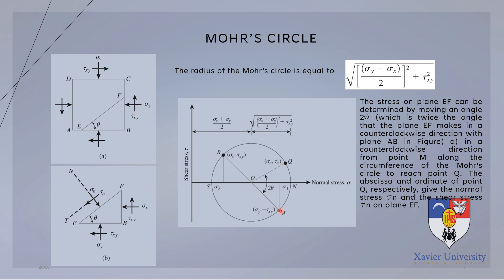From point M, we move 2-theta in a counterclockwise direction to arrive at a point on the Mohr's Circle. The coordinates of point Q — the abscissa (X-value) and the ordinate (Y-value) — give the normal stress and the shear stress respectively for the plane of consideration.